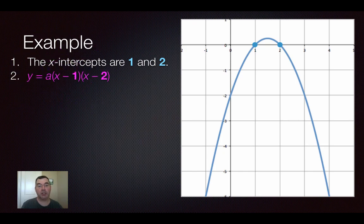So what I can do is I can write my equation as y equals some value of a, I don't know what that is yet, times x minus 1 times x minus 2. I do however know that my value of a should be negative because this parabola opens downward.